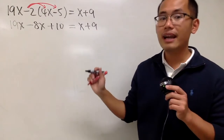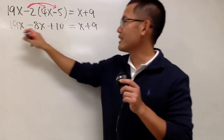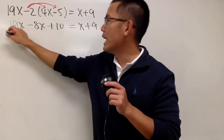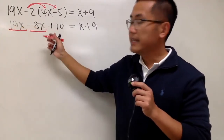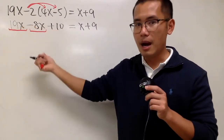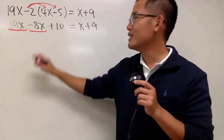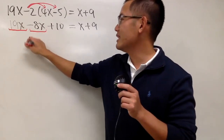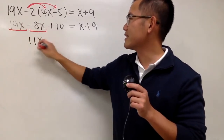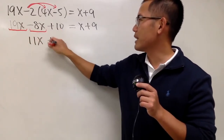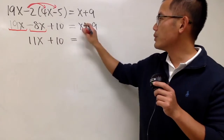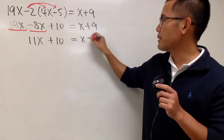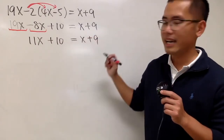Now we see on the left-hand side we have 19x minus 8x. We can combine like terms, so this is 11x, and we have plus 10, and that's equal to x plus 9.